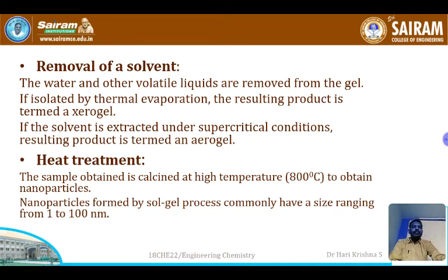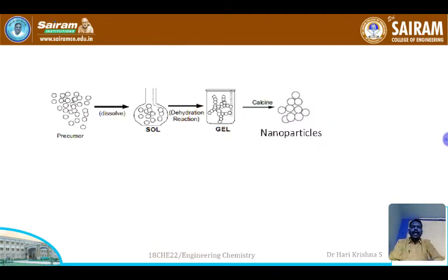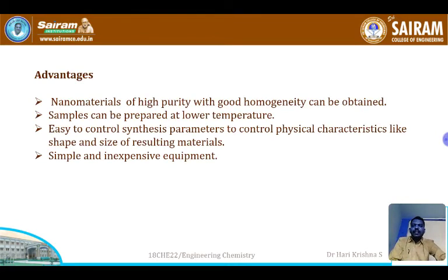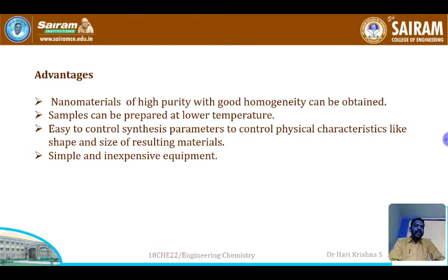This process can be shown diagrammatically: the precursor is converted to sol; the sol after dehydration gives gel; and the gel after calcination gives nanoparticles. The advantages of the sol-gel process include: high purity with good homogeneity, samples can be prepared at low temperature, easy to control synthesis parameters such as shape and size, and simple and inexpensive equipment.